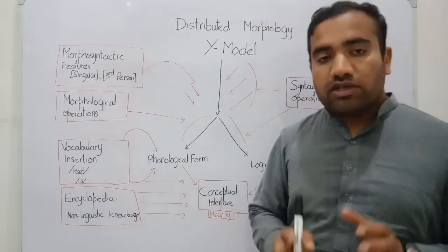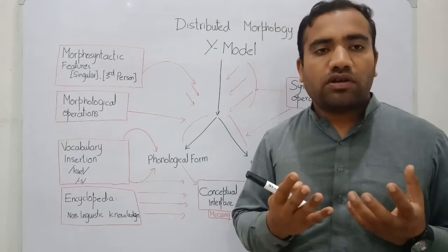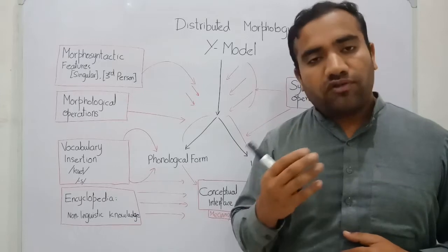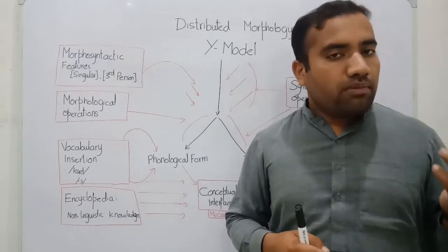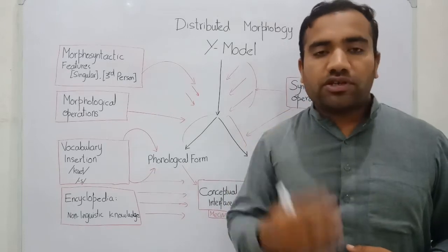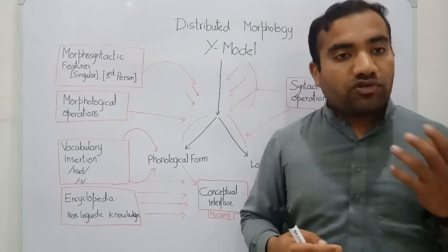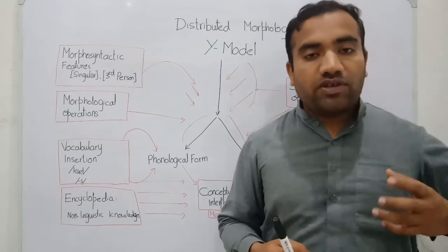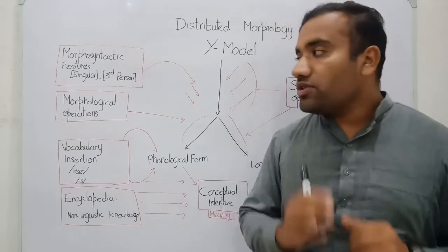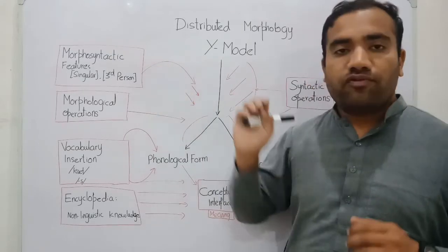The first thing is that we have morphosyntactic features. In syntax we already have features: the noun features — the number feature, the singular and plural feature, and the case feature. For the verb, we have the person feature, the tense feature, and the case feature. These are the abstract features. And in morphology, we have abstract morphosyntactic features.